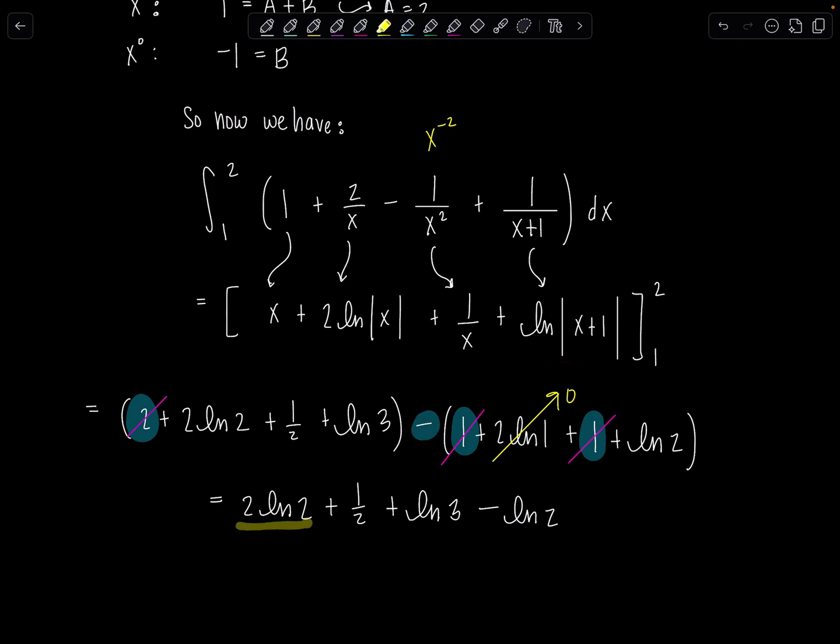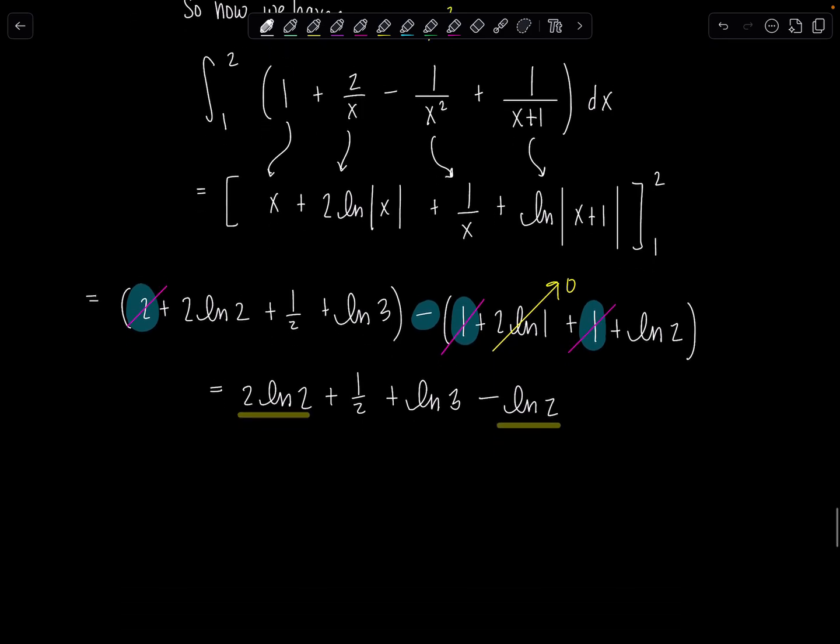So let's see what's left over. I have 2 ln of 2 plus 1 half plus ln of 3 minus ln of 2, because this negative distributes. And then I can combine both of these guys. 2 ln of 2 minus ln of 2 is just ln of 2 plus 1 half plus ln of 3. And then we ought to combine these into a single natural log. Natural log of 6 plus 1 half. And that's our final answer.